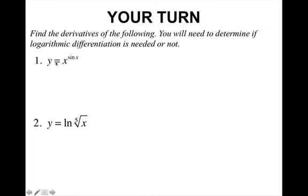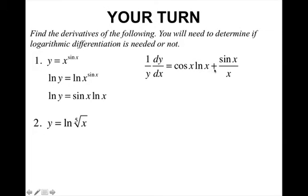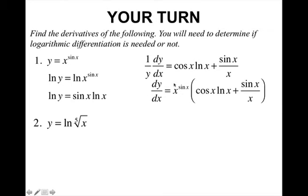On the first one, you should have noticed that yes, you do need logarithmic differentiation because you have something in the exponent. Take the natural log of both sides so that the exponent sine x can come down in front. Now take the derivative to get 1 over y dy/dx. Use the product rule on the right side to get cosine x times natural log of x plus sine x over x. Solve for dy/dx and replace y with x to the sine x.